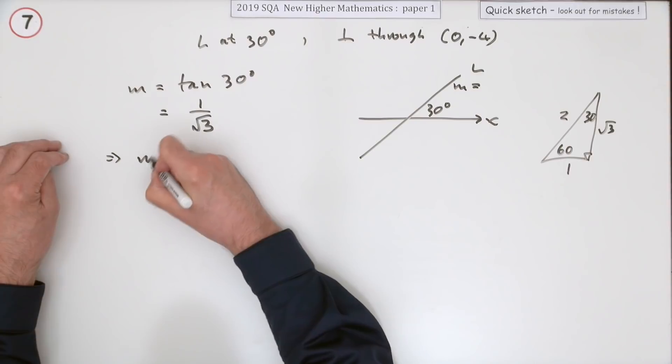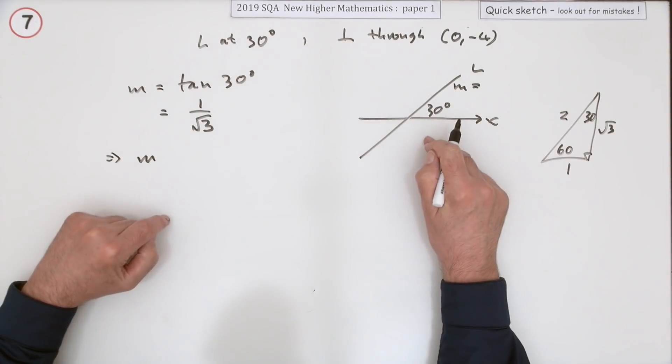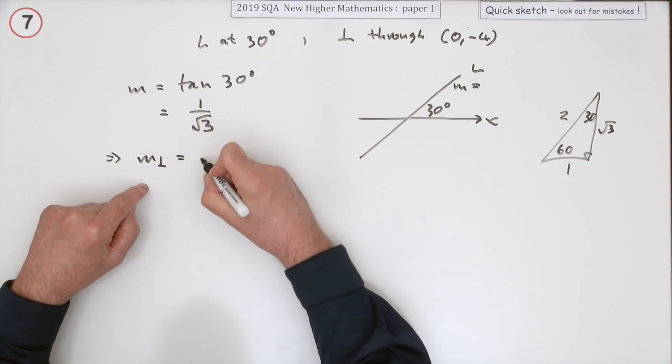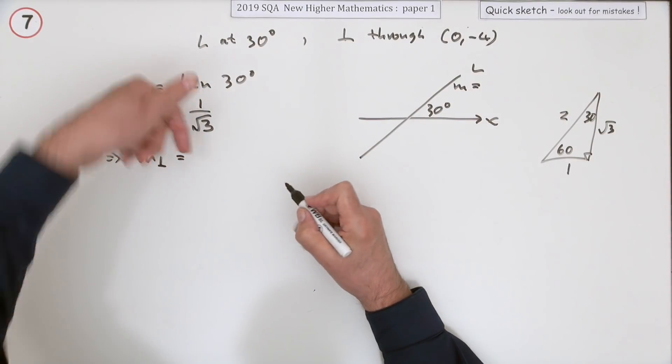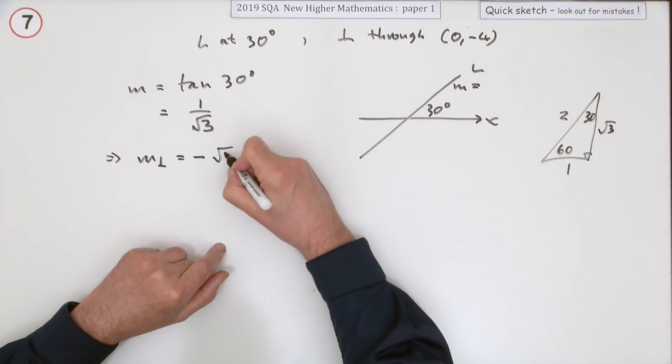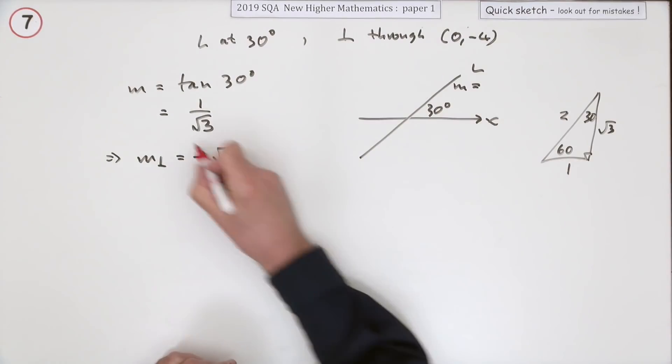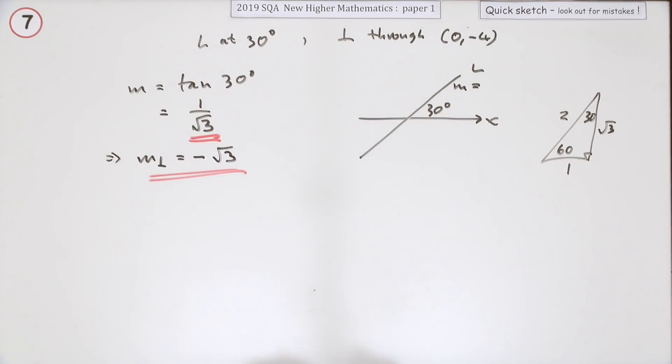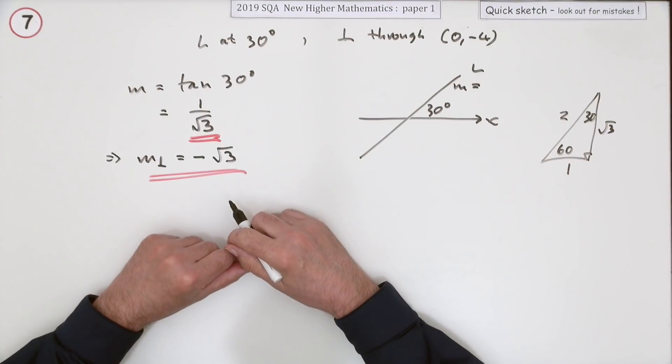So straight away then, if that's the gradient of this line and you want the perpendicular line, the perpendicular line will be the negative of the reciprocal - the negative of root 3. That must be the first couple of marks.